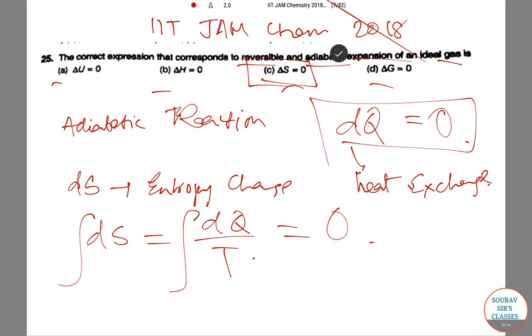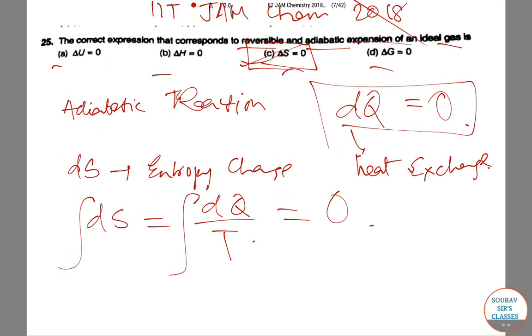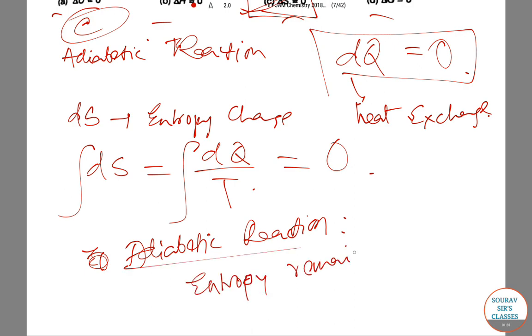In an adiabatic reaction, the entropy remains constant since no heat exchange occurs. And this is also called an isentropic process.